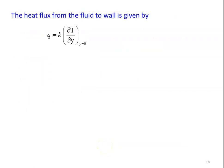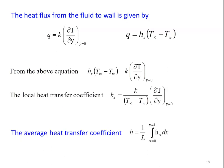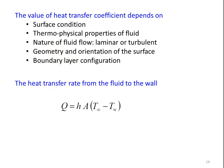The heat flux from the fluid to the wall is: q = k × (∂T/∂y) at y = 0, and also q = h × (T∞ - T_w). Equating these, the local heat transfer coefficient is: h_x = k/(T∞ - T_w) × (∂T/∂y) at y = 0. The average heat transfer coefficient is obtained by integrating over the plate length. The value of H depends on: surface condition, thermophysical properties of the fluid, nature of fluid flow (laminar or turbulent), geometry and orientation of the surface, and boundary layer configuration.